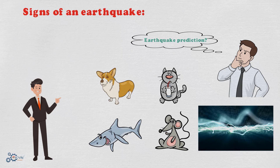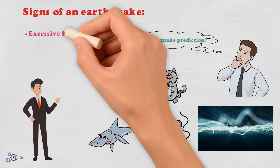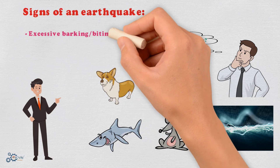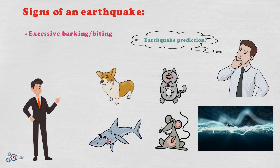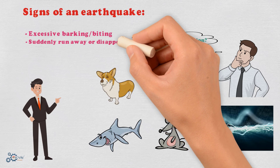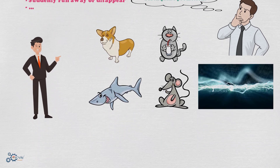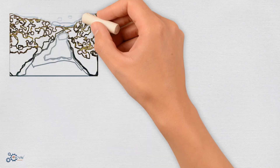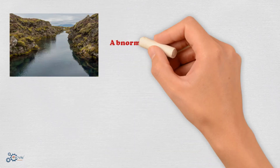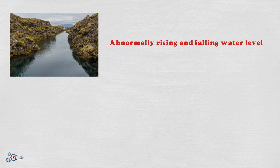Specifically, dogs may display unusual behavior such as excessive barking or biting. Pets may suddenly run away or disappear. Birds and chickens may lay fewer eggs than usual in the period before an earthquake. Secondly, pay attention to the rock layer and water level of rivers and lakes near the area. If water levels drop abnormally or overflow without any heavy rain during that time, it is a sign of volatility.